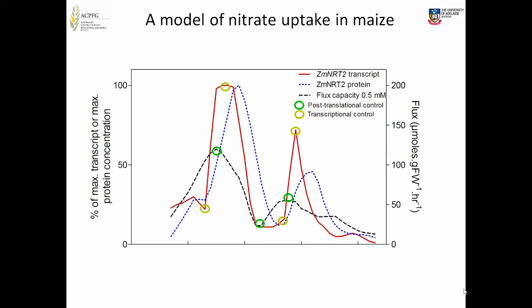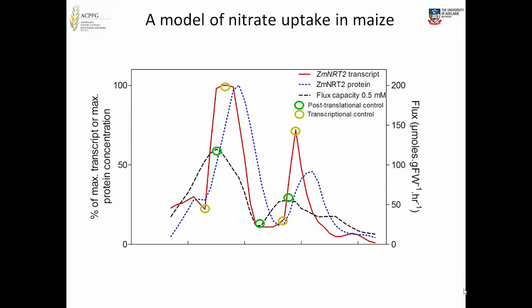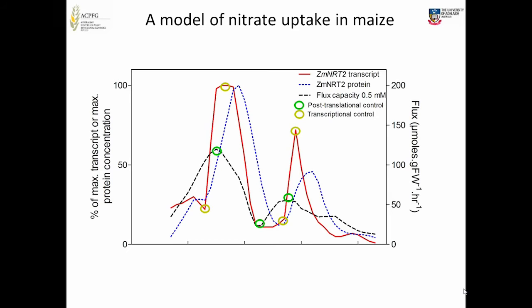We came up with a model of the major response to nitrate demand. In black is the actual uptake capacity, red the transcript levels, and blue the protein. We think there's both post-translational and transcriptional control. The first thing the plant does when it has demand is use its latent uptake capacity. When that's not enough, then you have the transcriptional event. We've been working to validate this model — we think it works, but it's a lot more complicated than we first thought.